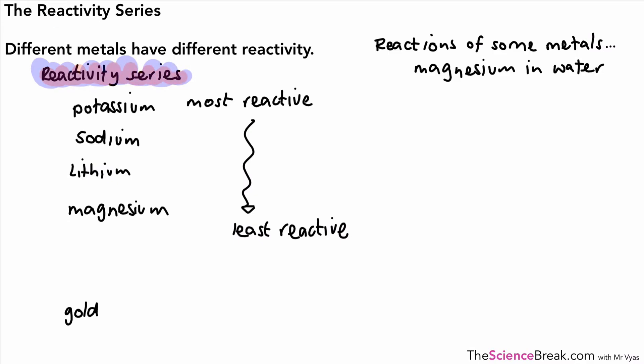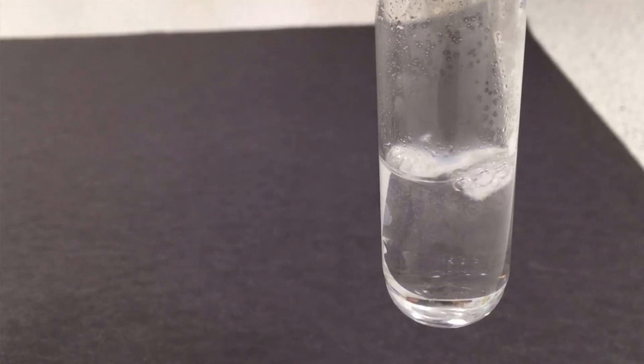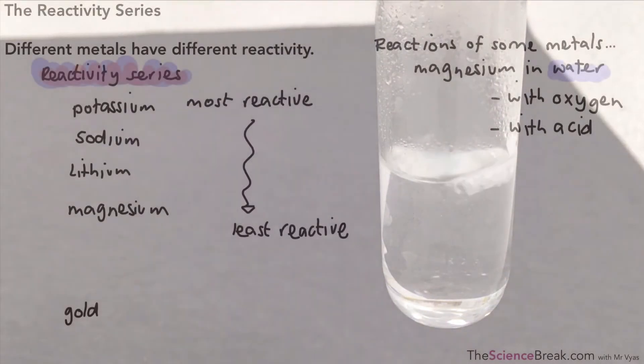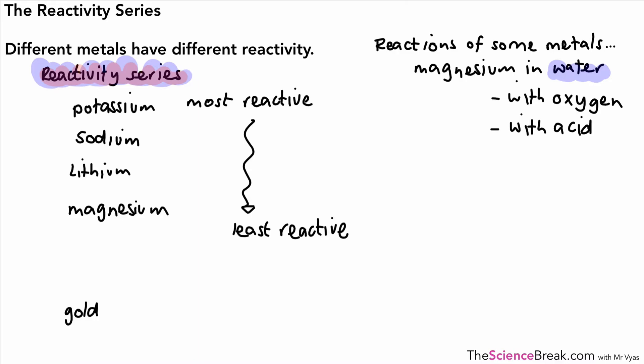We could look at the reactions of these metals not only in water, but we could test their reactivity with oxygen or in acid as well. We can use that for further evidence to see which metals are reactive compared to others. Here's magnesium in acid. There's hardly any reaction in water, but if we put it in acid, the reaction is much more rapid, much more vigorous, and it's giving off hydrogen as well.